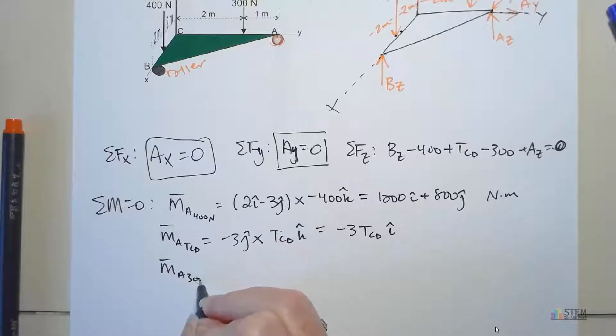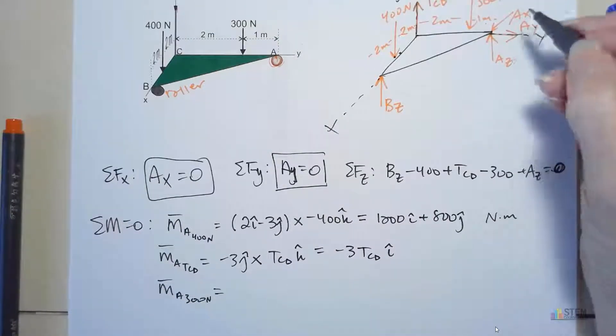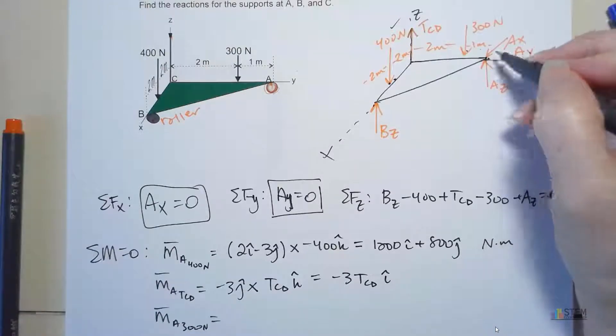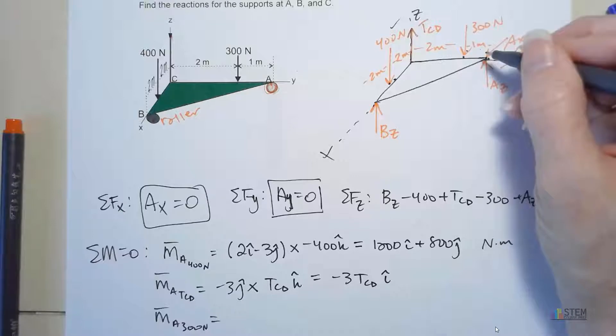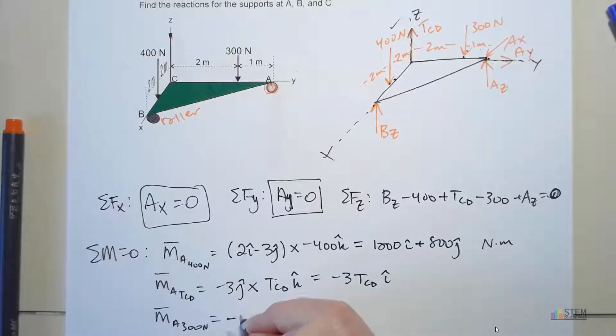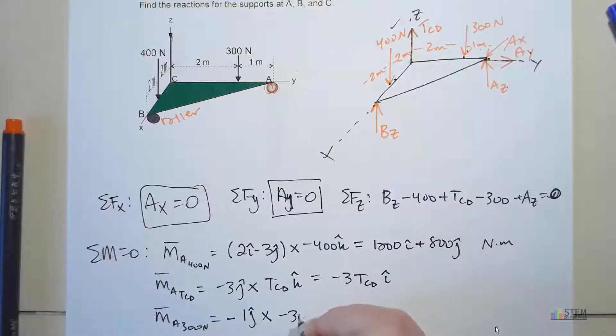Next, let's look at the 300N force. Here's the force, here's A. We need our position vector to go from A over to this point. That's negative 1J. We're going to cross that with negative 300K, which gives us 300I.